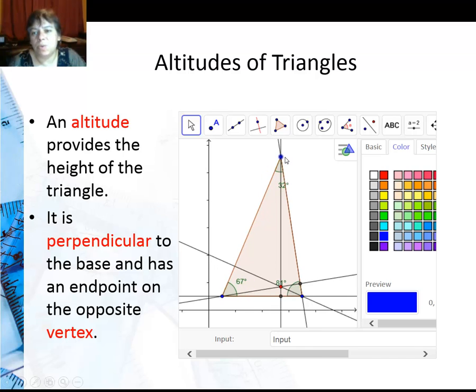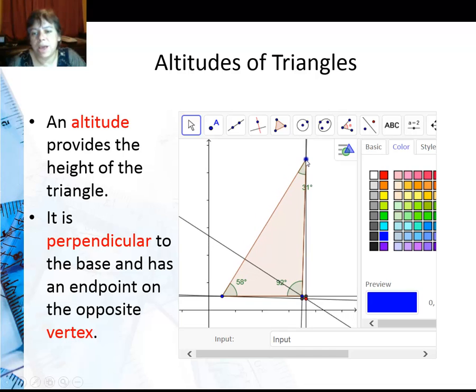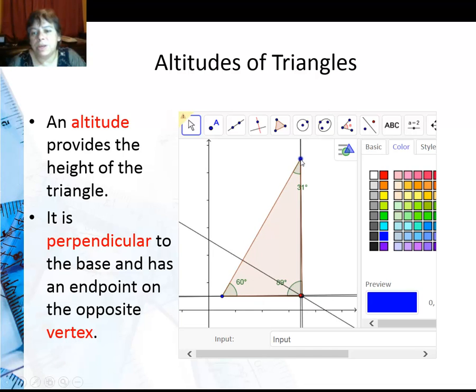Now if I manage to make this a right triangle, you can see the closer I get to a 90 degree angle, the closer it gets to that vertex. So if the triangle's a right triangle, the altitudes will actually intersect on the vertex of the right angle.